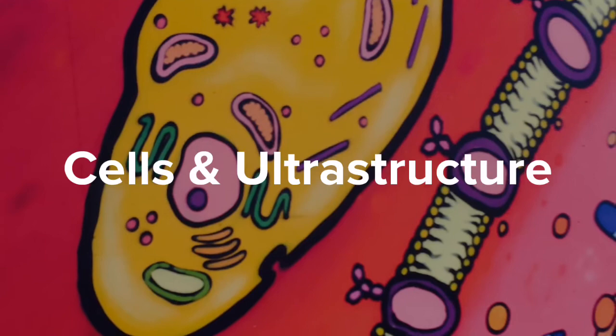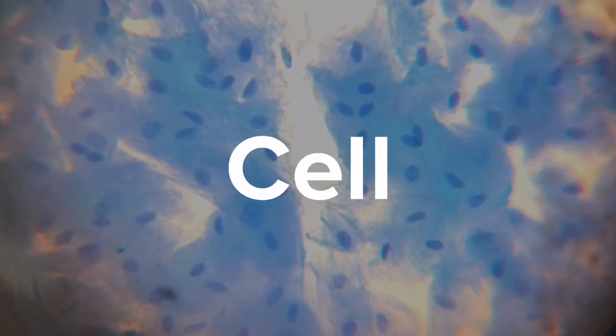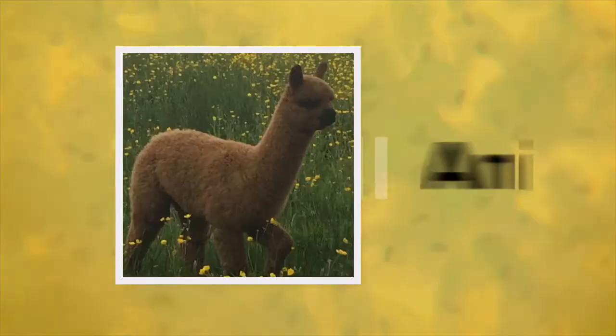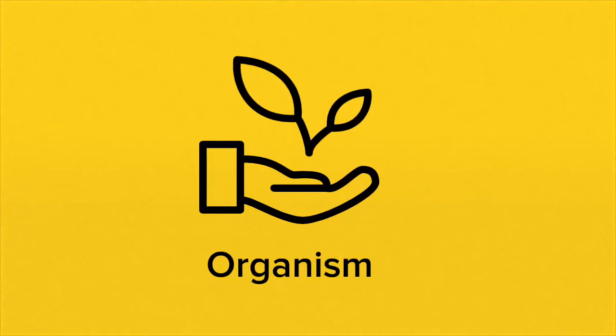This video covers cells and their ultrastructure, geared loosely towards the Irish Leaving Cert course. The most basic unit of life is the cell. Animals are made up of many animal cells and plants are made up of many plant cells. Plants and animals, as well as any other living thing, are classed as an organism.